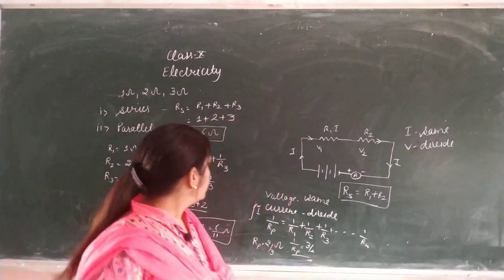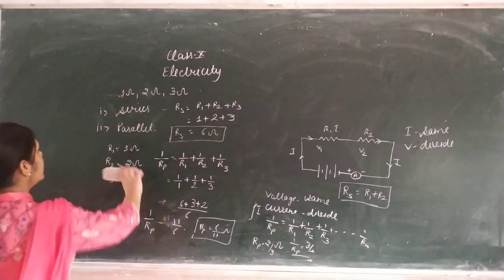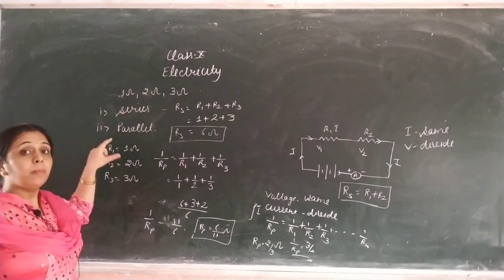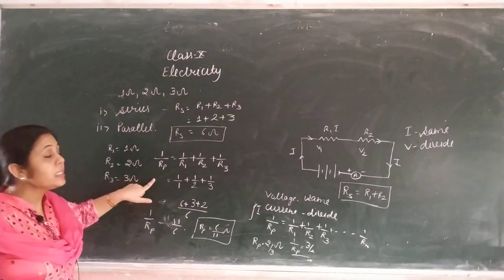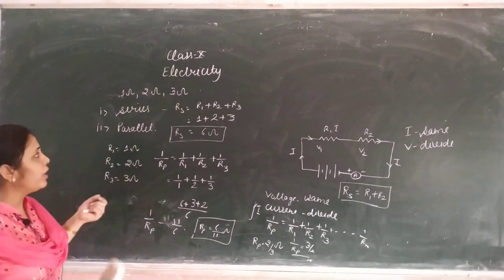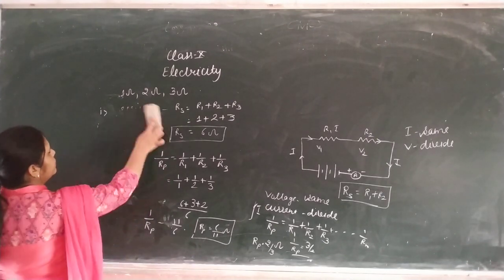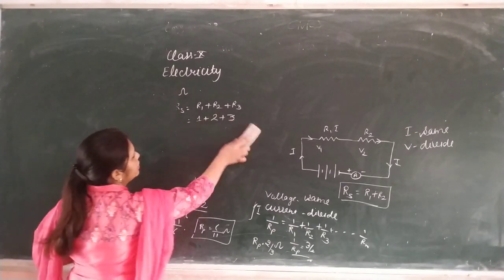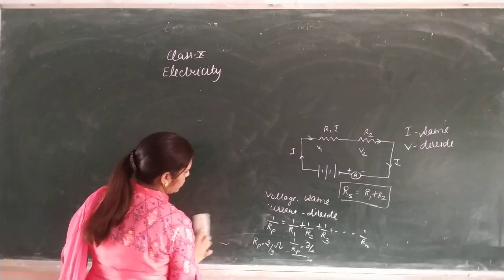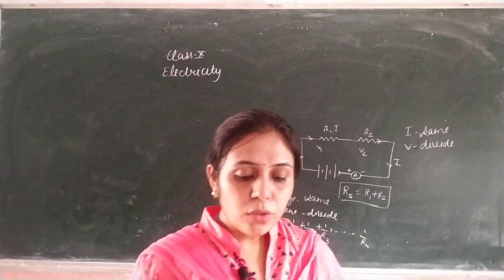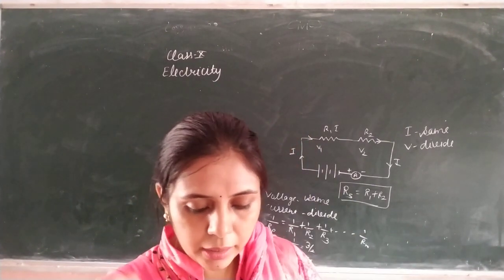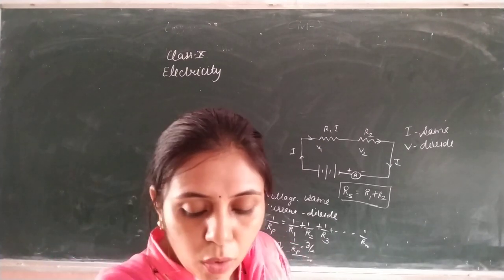Now let's do the next one. These are based on the same formula, and your combination numerical can also have both series and parallel together. Now we have separated them, but they can be combined too — with the help of a diagram you can find it. Next question: calculate the effective resistance, current, and potential difference across the 10 ohm resistance.